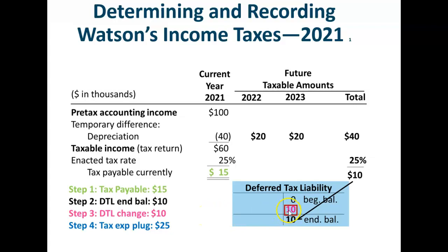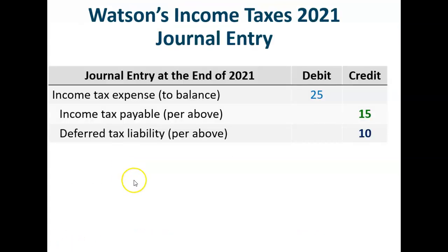Step three is a credit to the deferred tax liability to get its balance to move from zero to the $10,000 credit ending balance that it needs. Step four is to plug income tax expense: the $15,000 credit in taxes currently payable plus the $10,000 credit to deferred tax liability equals income tax expense. So Watson's journal entry for its 2021 tax provision is a debit to income tax expense of $25,000, a credit to income taxes payable for $15,000, and a credit to deferred tax liability for $10,000.